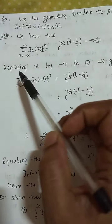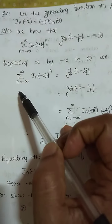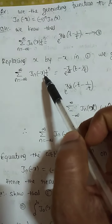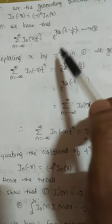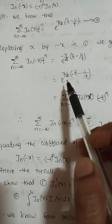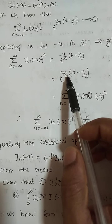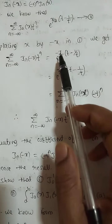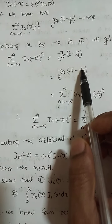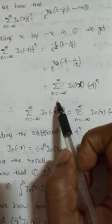In this expression we replace x by minus x. Then this becomes: summation n from minus infinity to infinity of J_n(−x) t^n equals e^(−x/2 · (t − 1/t)). We take a minus sign common inside: this equals e^(x/2 · (−t − (−1/t))), which can be written as e^(x/2 · (−t + 1/(−t))).